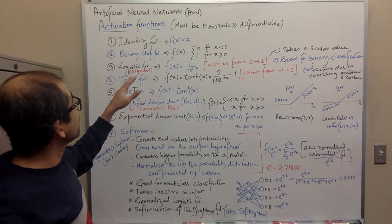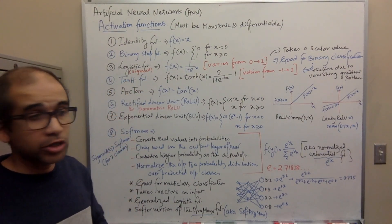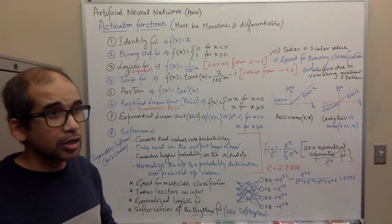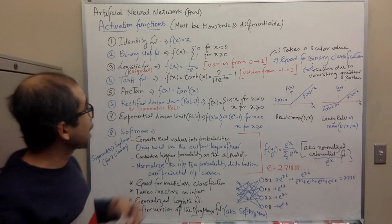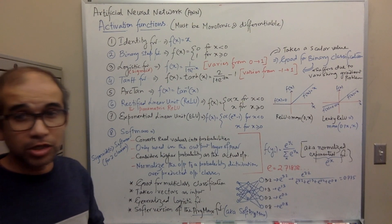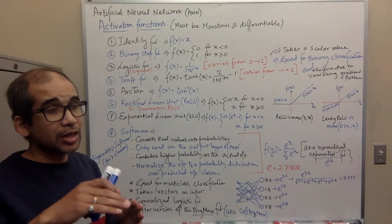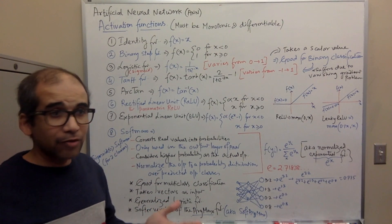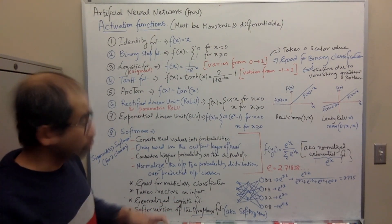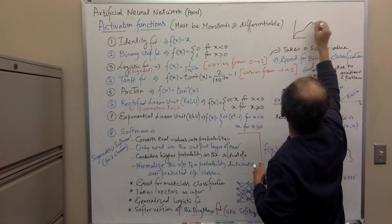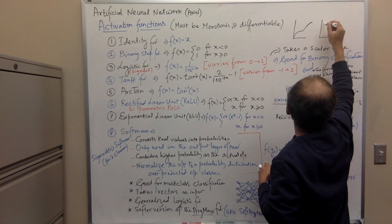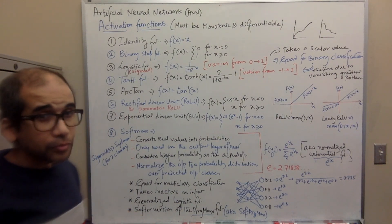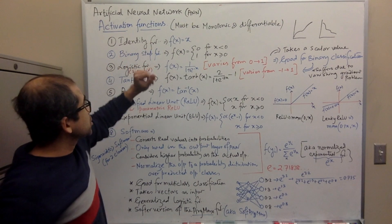An activation function must be monotonic and differentiable. Monotonic means it maintains order — it doesn't change suddenly. The first-order differential should not change sign; it should maintain its order, whether increasing or decreasing. A random sine curve, for example, is not monotonic. A function going consistently up or consistently down is monotonic. It must also be differentiable.